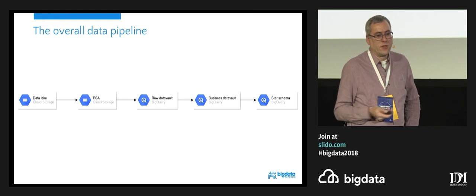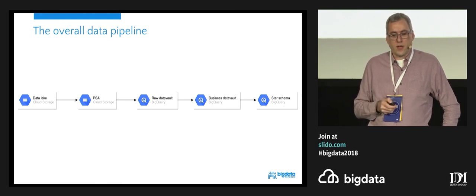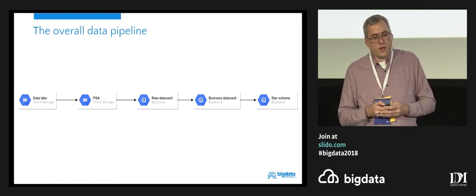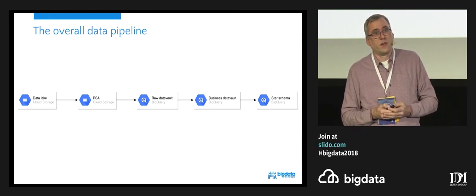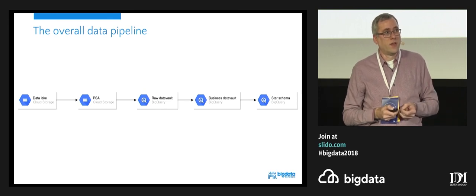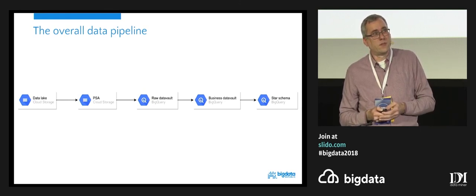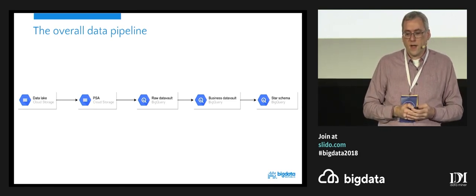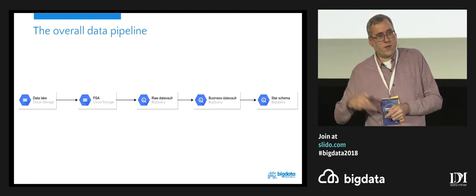What I'm suggesting is an idea I've been experimenting with. In this overall data pipeline, I'm going to use a data lake as the source for my data warehouse. I'll manage the extracted data using a persistent staging area — basically a location where all the raw data gets stored without too many modifications, the data as-is from the source systems. I will be using a Data Vault architecture. Data Vault is still not widely adopted, but I think it is incredibly useful. From the raw Data Vault, we go to a business Data Vault, which is the step where business rules get applied, and from there we eventually go to a star schema.